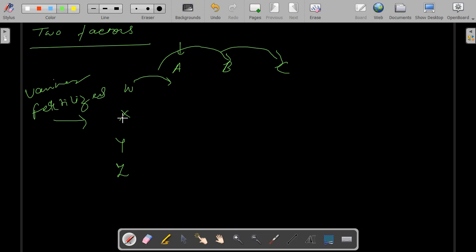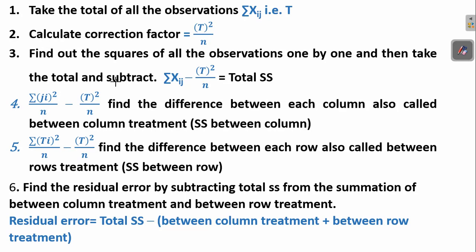Now let's discuss the steps involved in calculation and testing of two-way ANOVA. The first step is to take the total of all the observations. Suppose we have samples A, B and C with W, X, Y and Z. We take the total — 2, 3, 4, 5, 6, 7, 8, 9, 10, 11 and so on — and then we have our summation of X_ij.